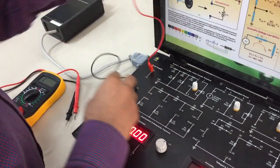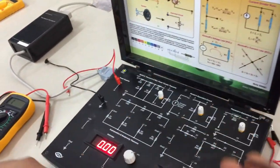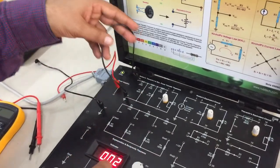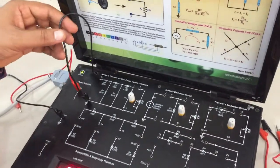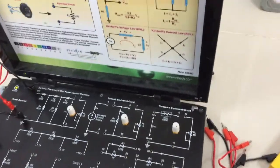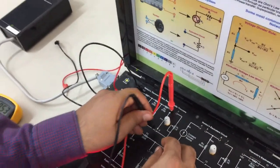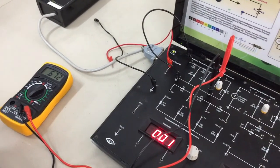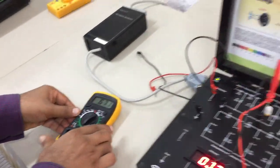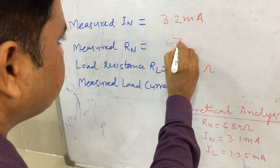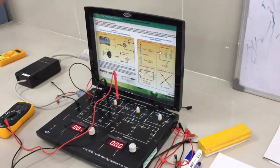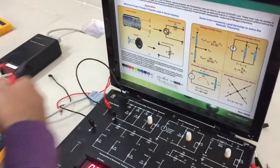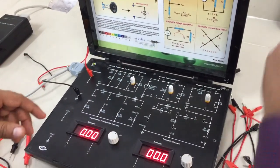To measure the Norton equivalent resistance Rn, we replace the energy source — the voltage source — with a short circuit by shorting the VCC and ground terminals of the circuit. With the help of a multimeter, we measure the resistance across terminals 1 and 3. This gives us the equivalent Norton resistance of 672 ohms.